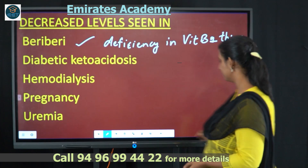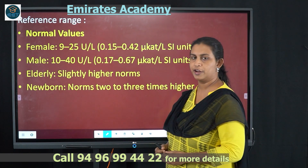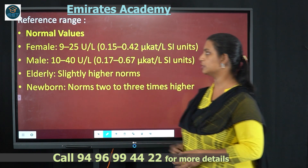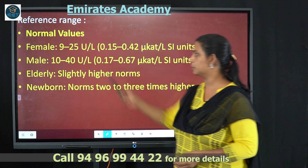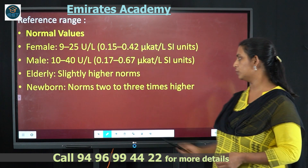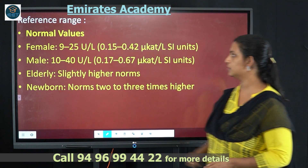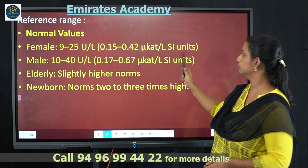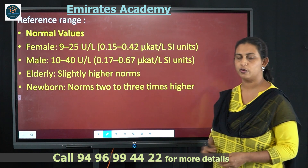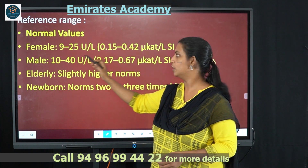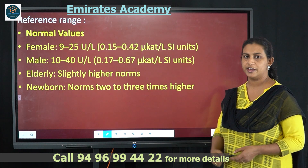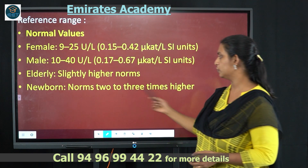The normal reference ranges for AST are: females 9–25 units per liter, males 10–40 units per liter. Elderly people will have slightly higher than normal values, and newborn babies will have values two to three times higher than the adult reference range.